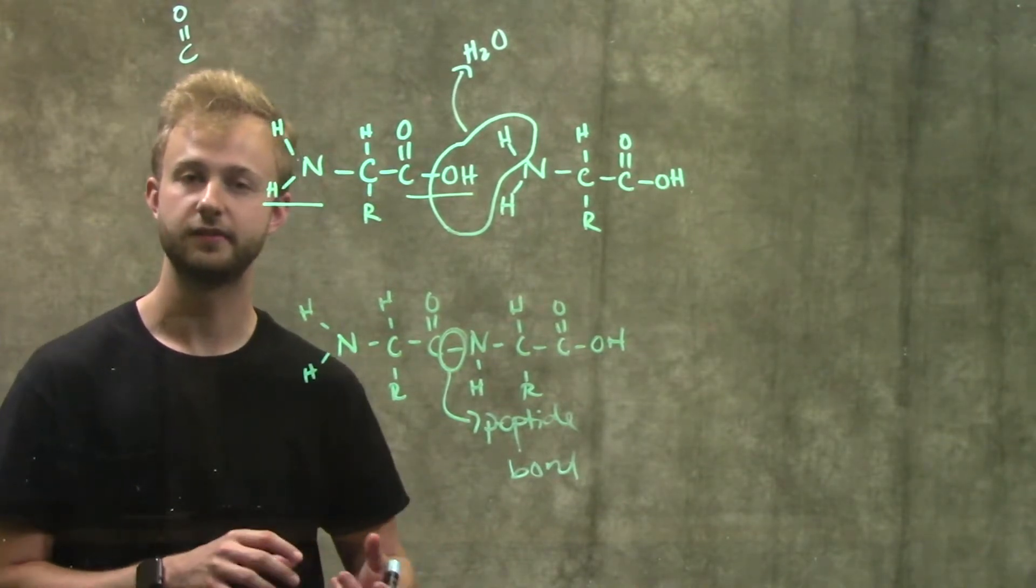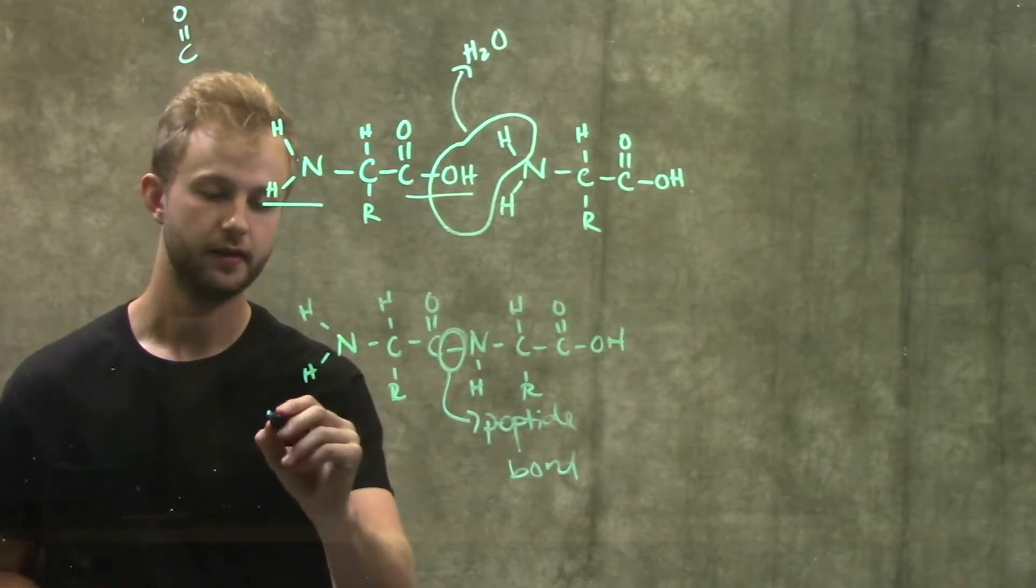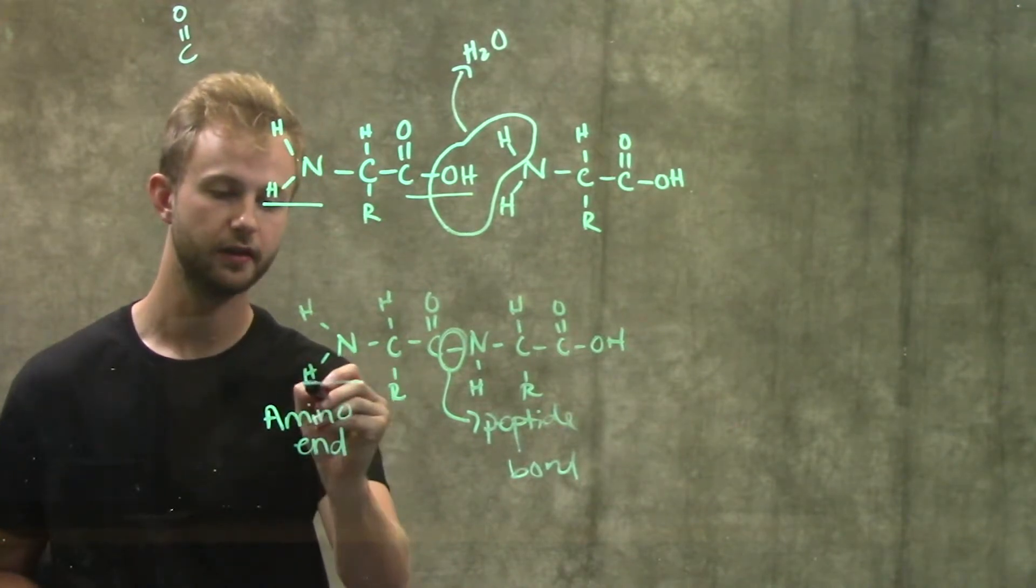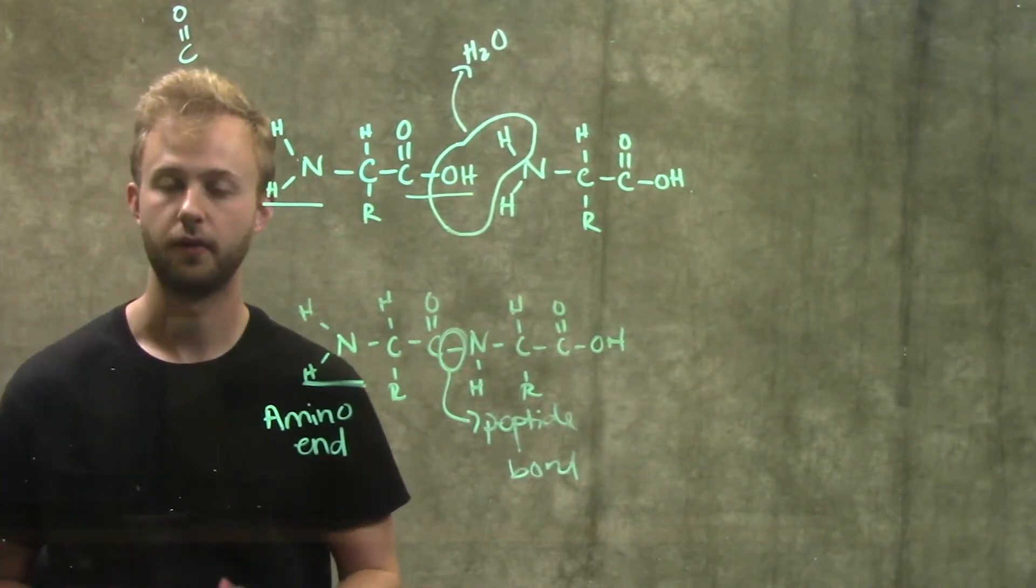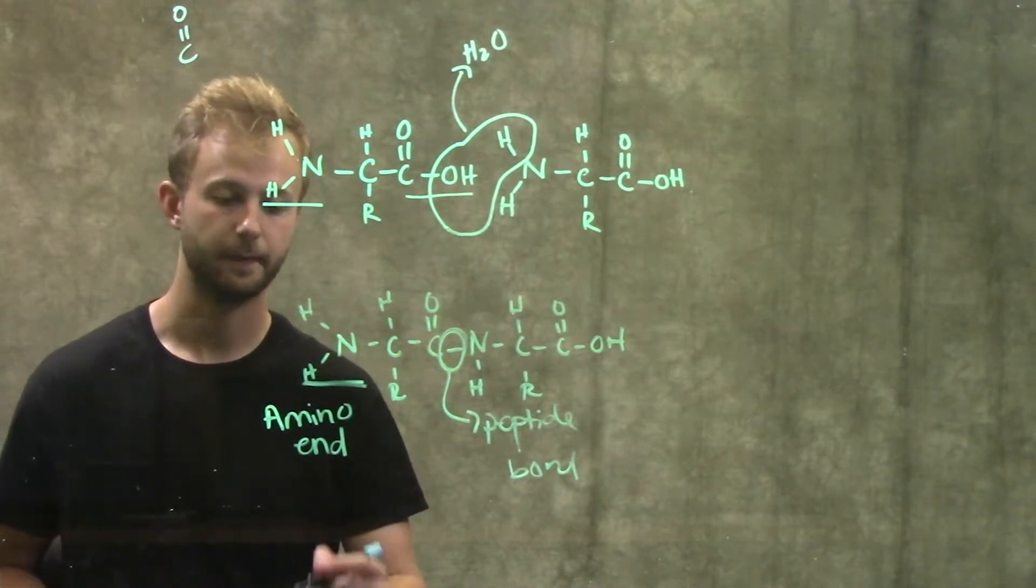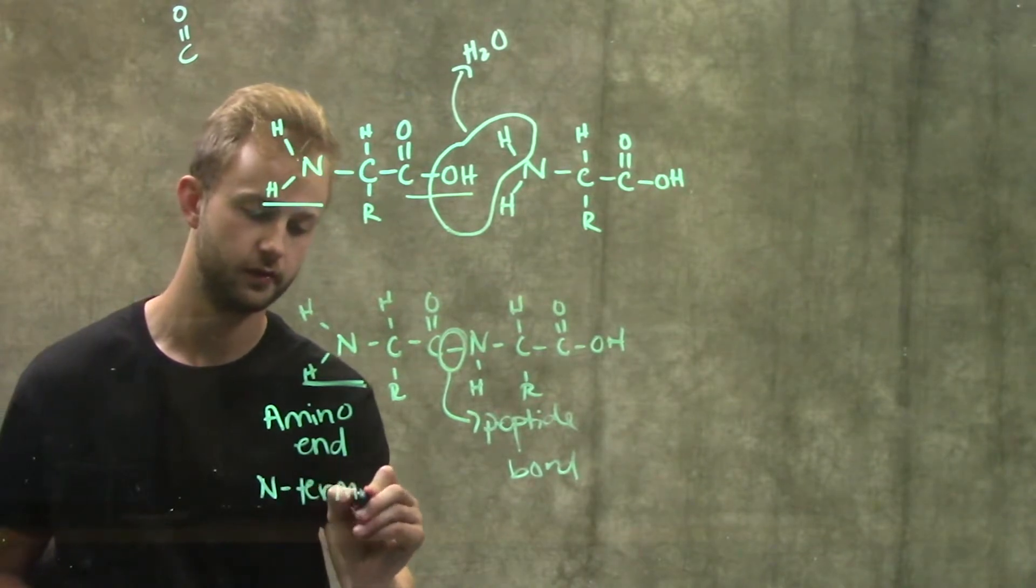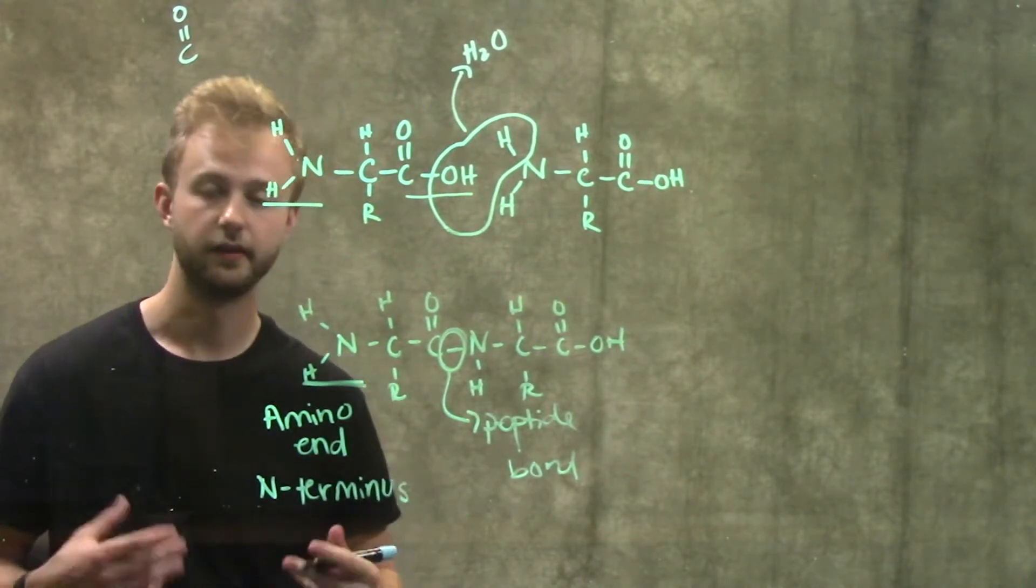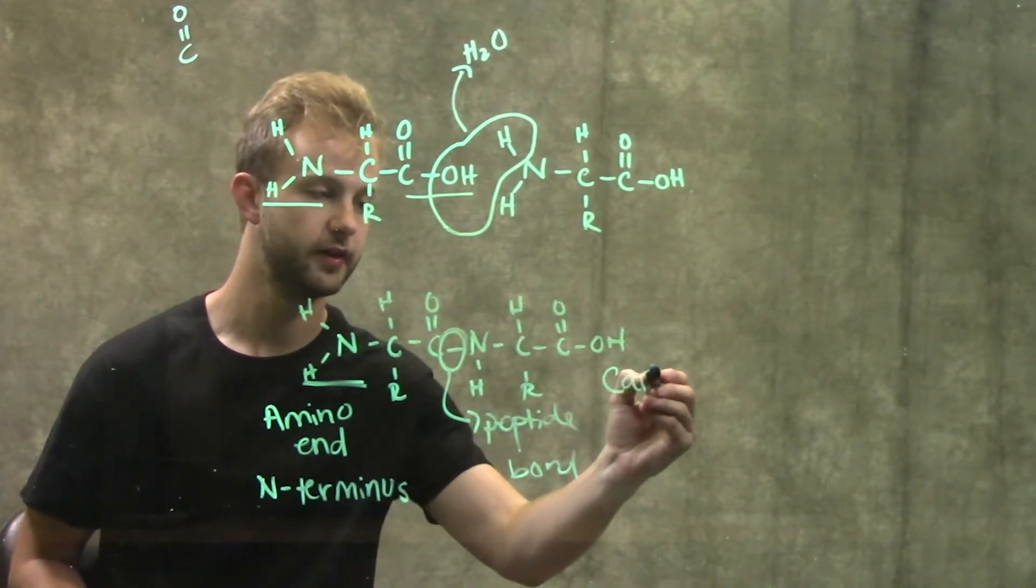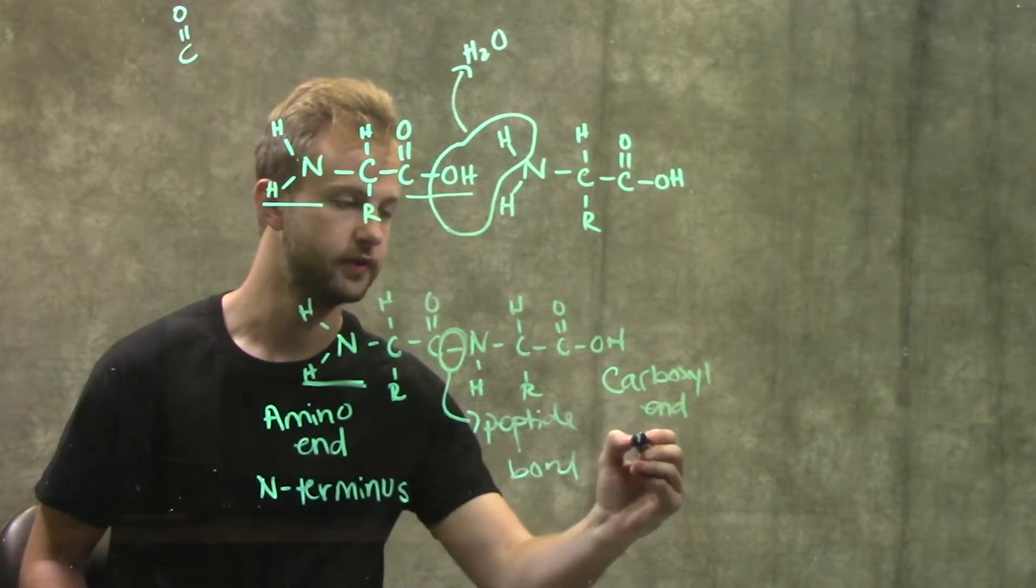Whenever we're making polypeptides, polypeptide synthesis always begins at the amino end of the polypeptide. So that's going to be this end right here. This is where we're going to start polypeptide synthesis, the very beginning of the polypeptide. This end is also called the N-terminus. And then the last amino acid is going to be at the carboxyl end or the C-terminus.